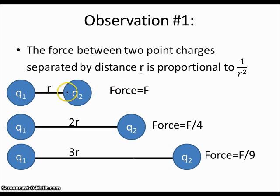This means that if I were to double the distance or make it 2r, that means that the force would reduce not by a half but by a fourth, because it's 2 squared or 1 over 2 squared which is 1/4.